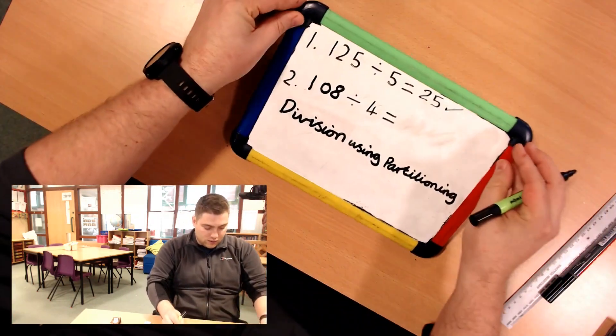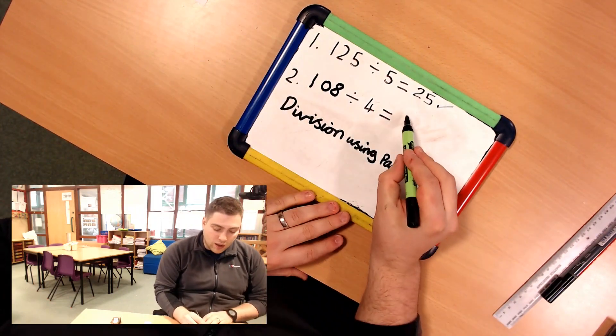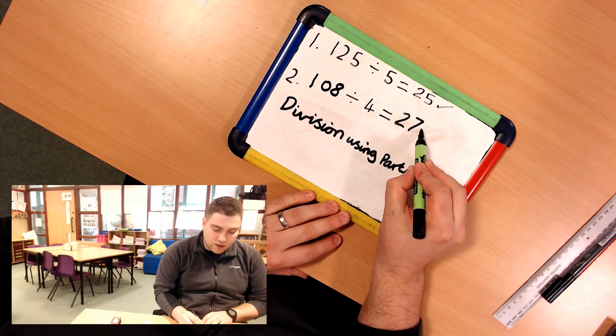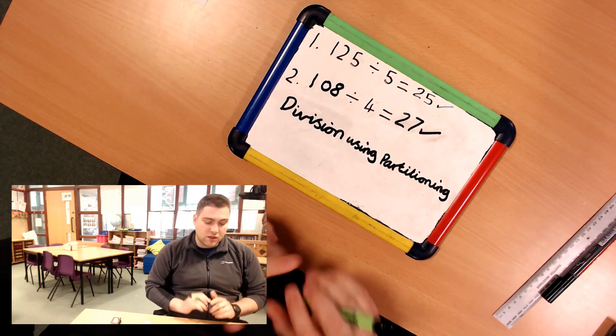If I flip it back over, 108 sweets divided by 4 friends, they would get 27 sweets each. And that's how you use flexible partitioning or partitioning for division.